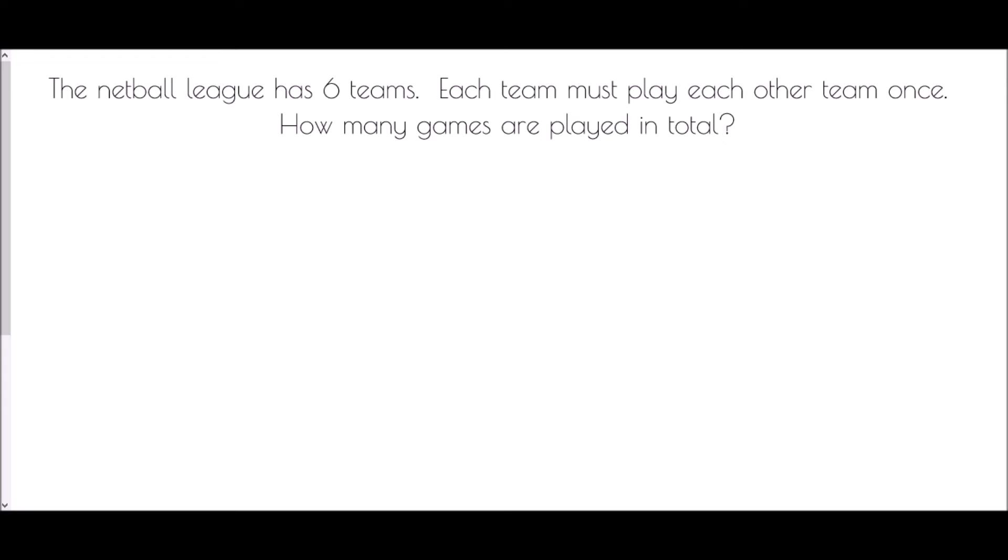Okay, so just one more example that you won't find on your worksheet. The Netball League has six teams. Each team must play each other team once. How many games are played in total? Now, if we have six teams, if we think about our product rule, we've got six times—now six times what? Well, each of the six teams have to play against five others. And so it will be six times five. And so the obvious answer here would be that there are 30 games to play.